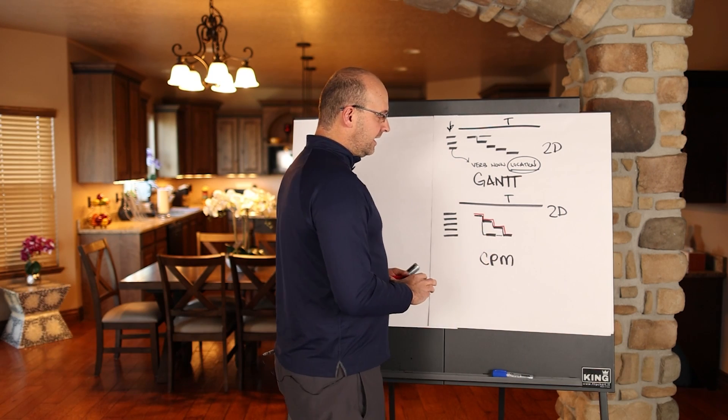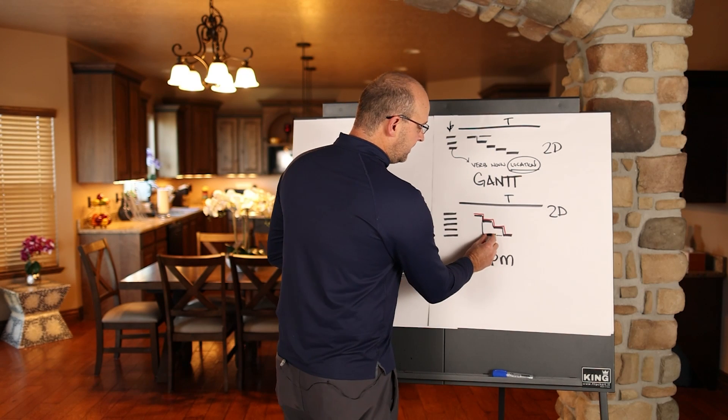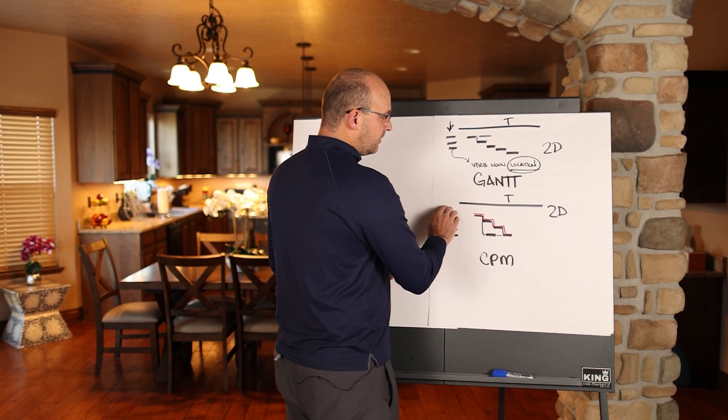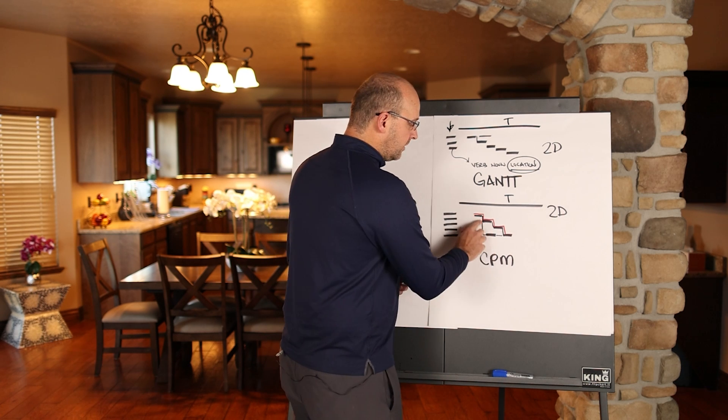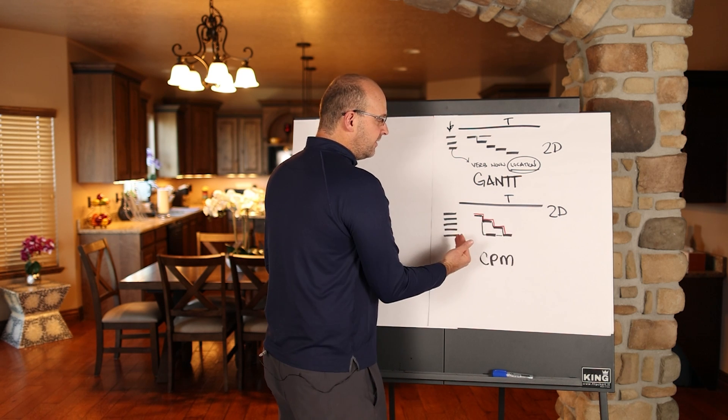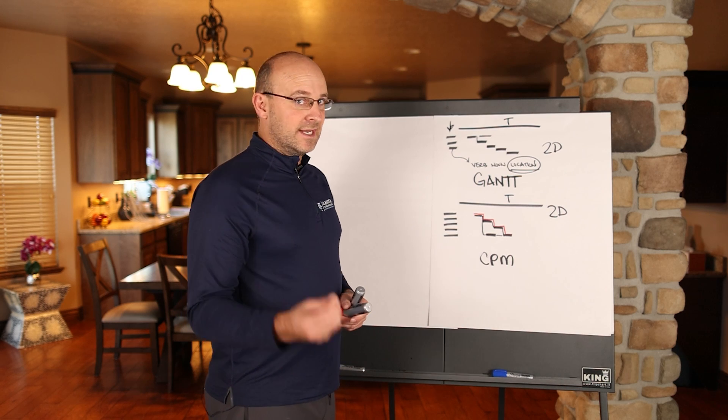So this activity right here has what's called free flow, and in some cases, total project flow, which means that this activity can move forward and back. So the critical path method will create what, meaning the user will create the logic throughout this, the computer will do the forward and backward pass and move everything to the left and identify how much flow each activity has.